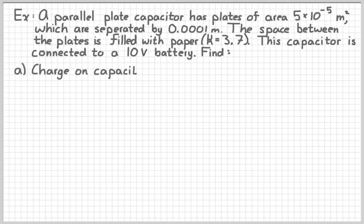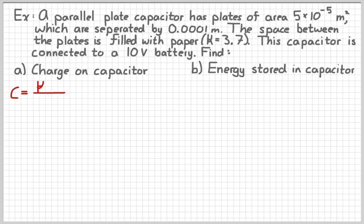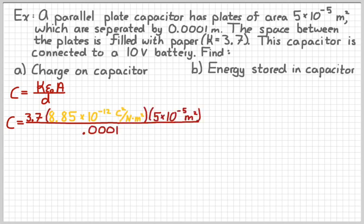And we want to find how much charge is gathered on the capacitor, and then how much energy is stored in the capacitor. So, before we do either of those things, we need to figure out the capacitance. And so, capacitance is kappa epsilon naught A over D. So, plugging in our numbers, kappa is 3.7. Epsilon naught is that ridiculous number there. Area is 5 times 10 to the negative 5th square meters. And then we have that really small distance on bottom. Don't forget the value for epsilon naught is on your equation chart. Look it up whenever we need it.